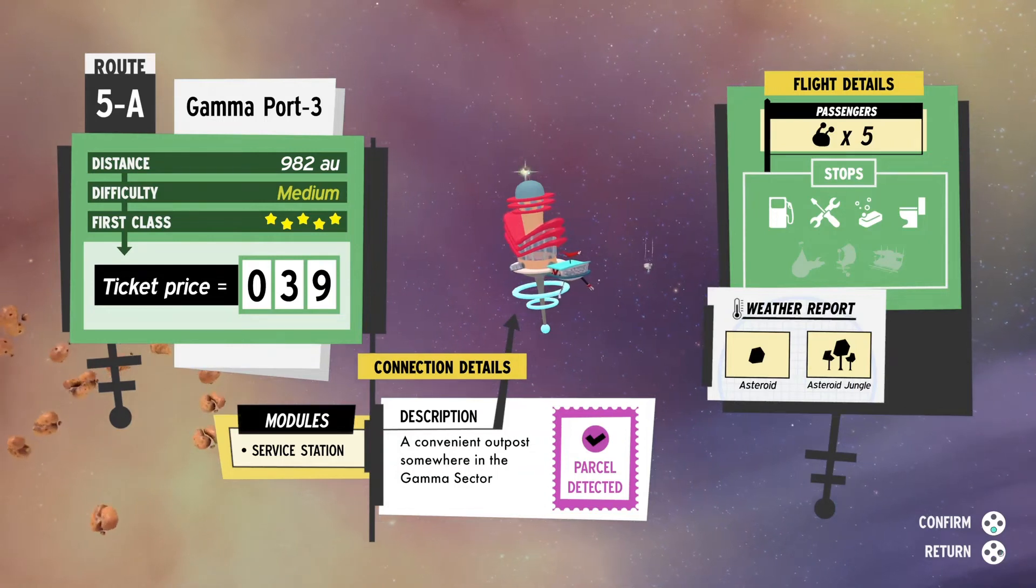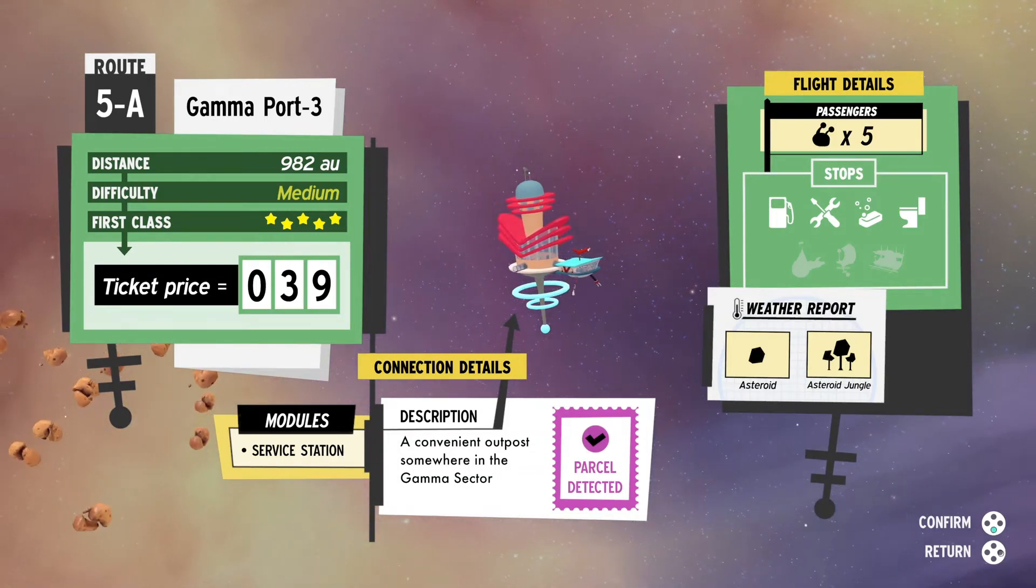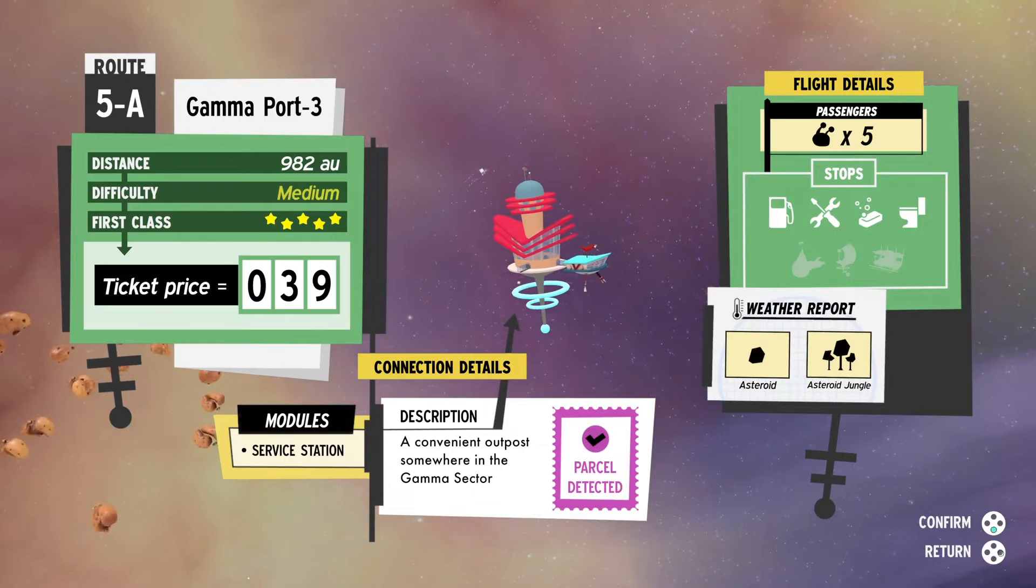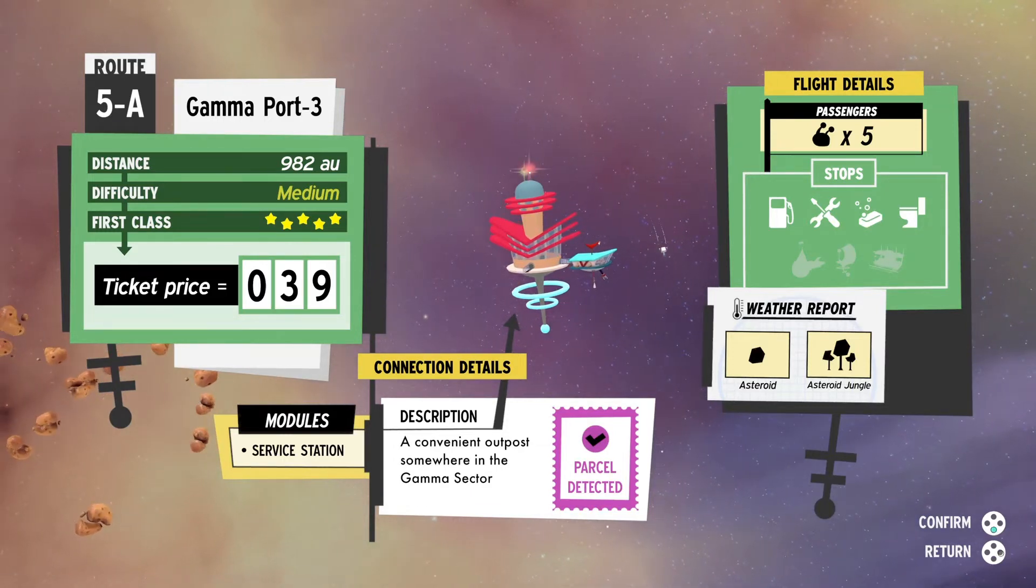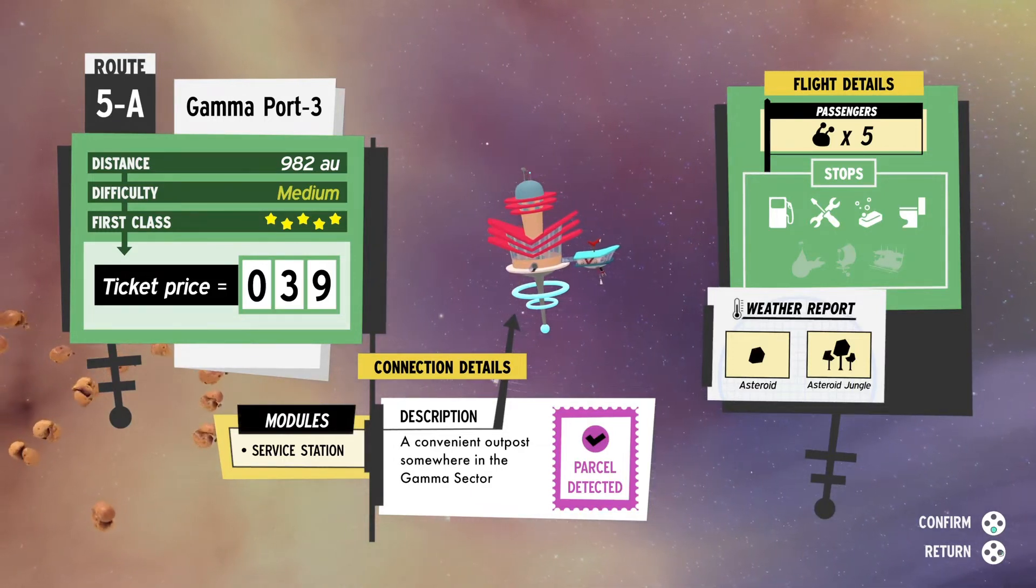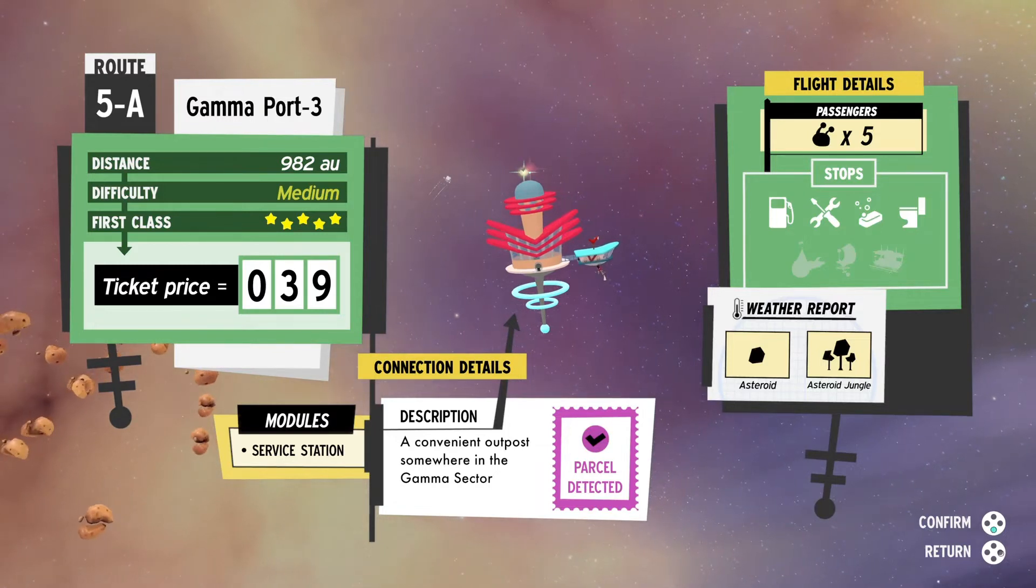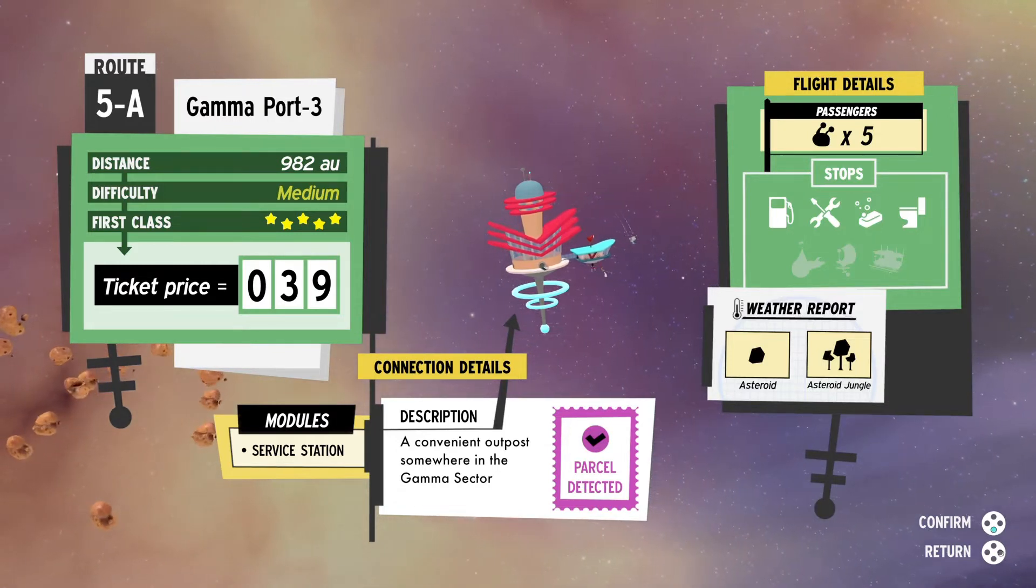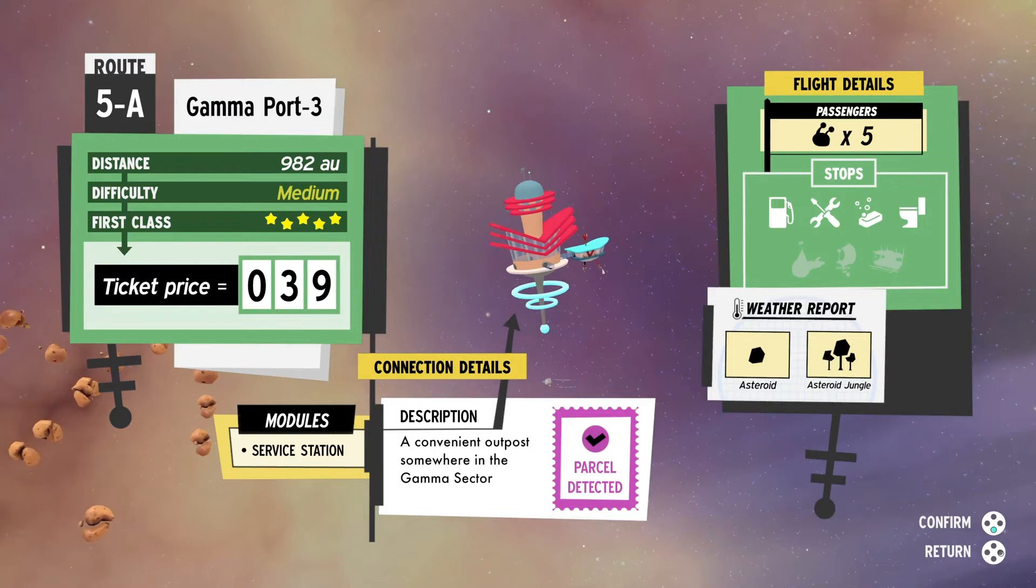Welcome back. If you're like me, I feel sorry for you, but when I started playing this yesterday, I was trying to figure out what those seven icons under stops at the right, under flight details, meant.